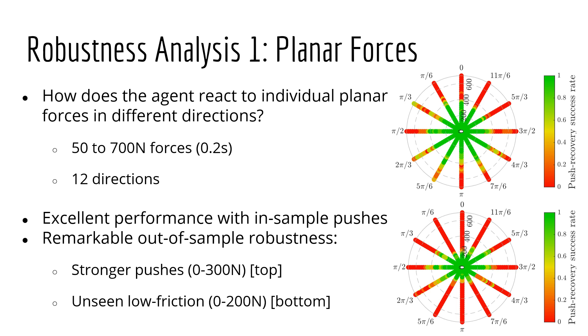We evaluate how the trained agent performs when individual planar forces are applied to the base of the robot in 12 different directions and magnitudes, ranging from 50 to 700 newtons, including widely out-of-sample magnitudes. We observed excellent success rates for in-sample pushes and remarkable robustness to out-of-sample scenarios. In particular, on the top right, we can see that the agent is always able to recover from pushes up to 300 newtons, while experiencing training forces only up to 200 newtons. Moreover, the agent is also robust to unseen low friction settings, still being able to counteract forces in the training range, as shown in the bottom right.